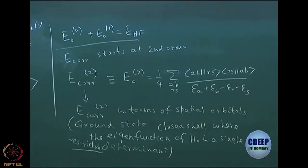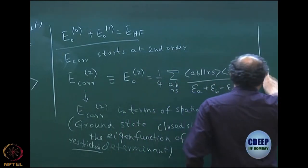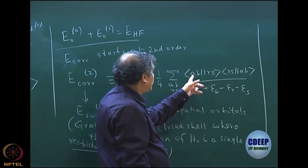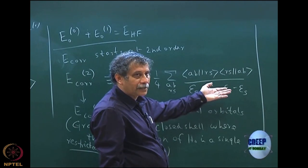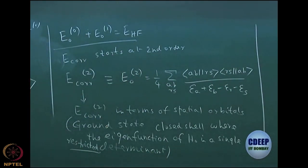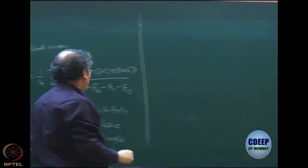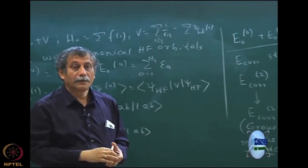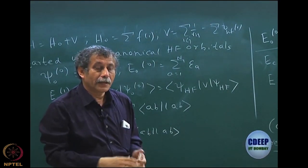You essentially get this as the first correction to the Hartree-Fock energy, and that requires two-electron integrals between two sets of occupied orbitals and two sets of virtual orbitals. At this point these are spin orbitals, but we will discuss what happens when you integrate and get spatial orbitals. Let us now go ahead and try to understand this — the MP1 correction.